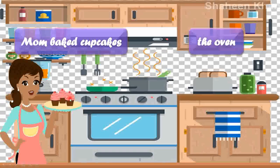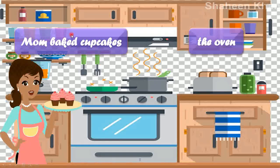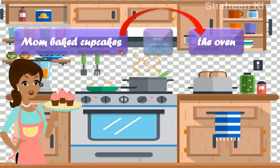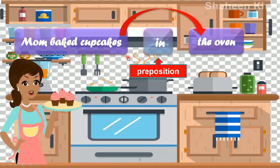Now here you have a kitchen, and there's a mommy who has baked cupcakes. So 'mom baked cupcakes' — and where did she bake them? The oven. But how am I going to link the group of words 'mom baked cupcakes' to the noun 'oven'? I need to connect them by using a connecting word. Which one is it? 'In.' Mom baked cupcakes in the oven. So 'in' is our preposition. Excellent.